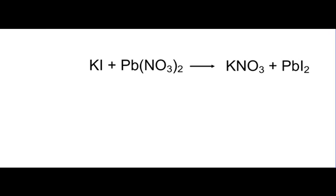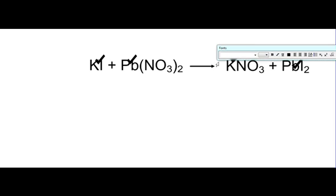Now if we have to balance the equation, it is important to balance it so that we know exactly what we are doing. If we look on the left hand side we got one potassium on this side and we got one potassium on that side. We've got two nitrates on this side and we've got one nitrate on that side. So we need to balance the nitrates by putting a two in front of the potassium.